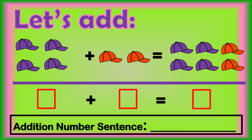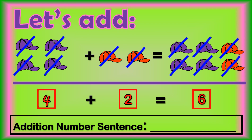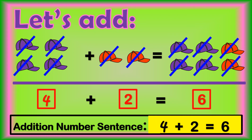First, count the purple caps. 1, 2, 3, 4 — 4 purple caps. Then the orange caps. 1, 2 — 2 orange caps. Now count the purple and orange caps together. 1, 2, 3, 4, 5, 6. There are 6 caps in all. Now we write 4 plus 2 equals 6 like this.